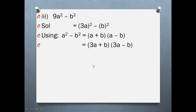The fourth part, 9m² − 16n², is your homework. Note that 9 is a perfect square of 3, giving (3m)², and 16 is a perfect square of 4, giving (4n)². Try to solve it by yourself.